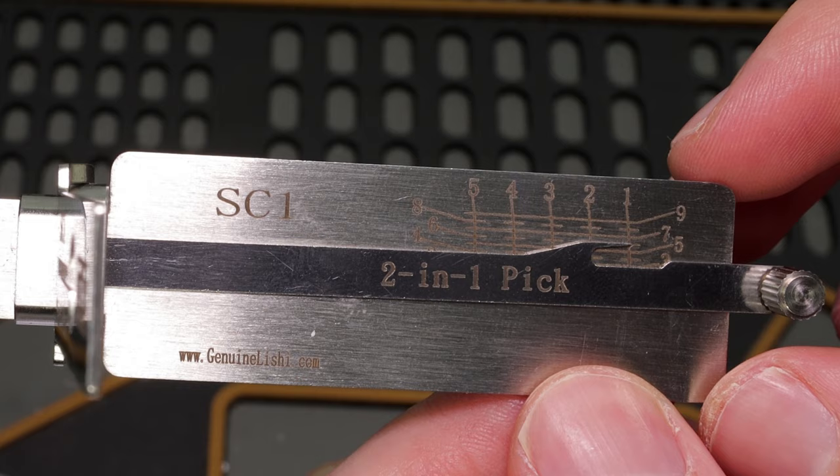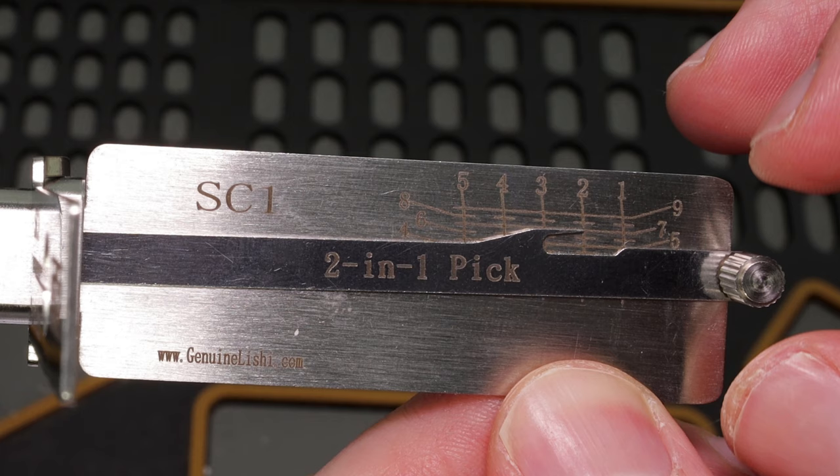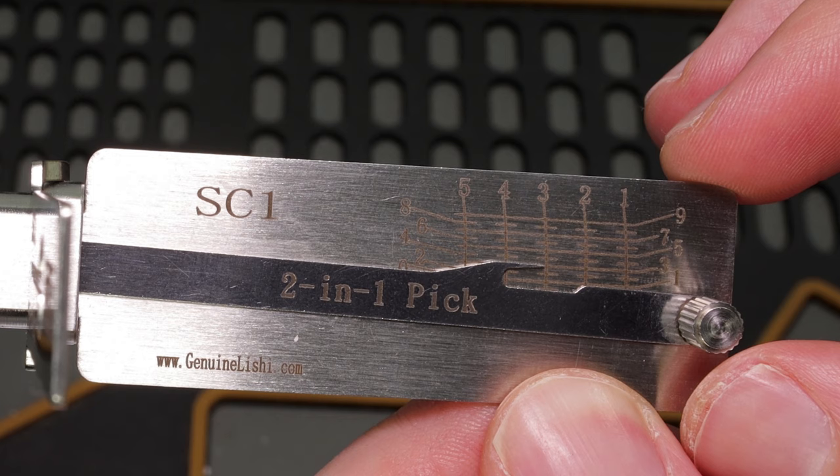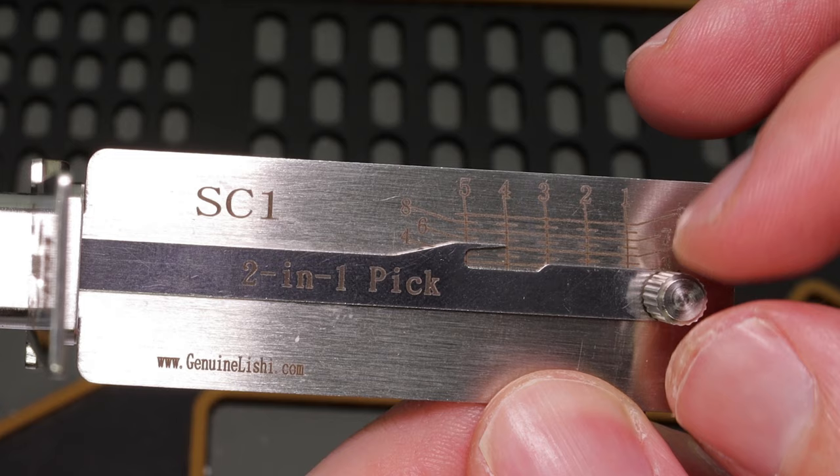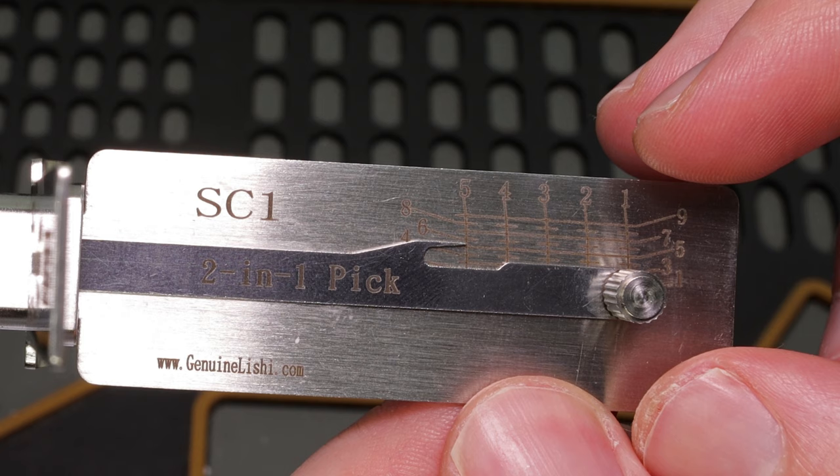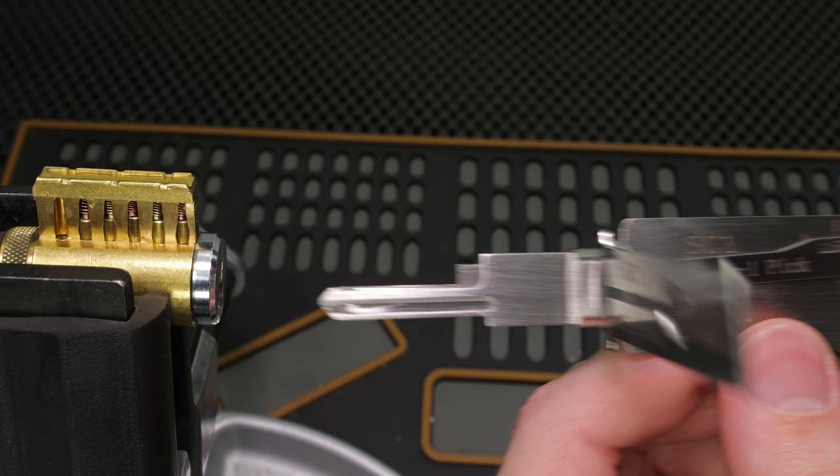So taking a look at the very first pin, that looks like it's going to be a 6 cut. Moving on to the next one, that's going to be a 7. In Chamber 3, we are going to be looking at a 3 cut. 4 is going to look like a 5 cut. And 5 is going to look like a 5 cut. So having decoded this lock before, I know that that looks accurate.